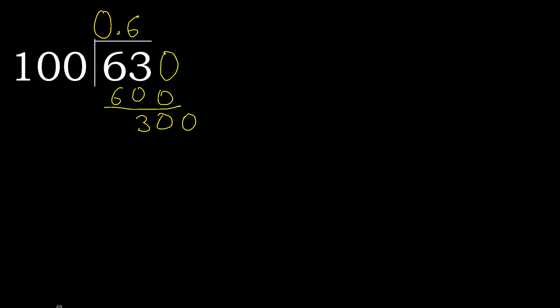There is no number, therefore complete. Always complete with 0. Point is here: 300. 100 multiplied by 3 is 300. 300 subtract 300 is 0, therefore finish.